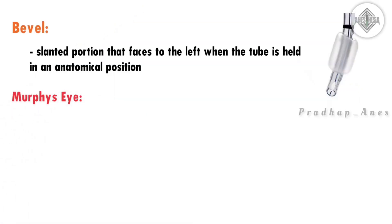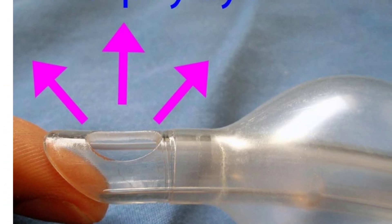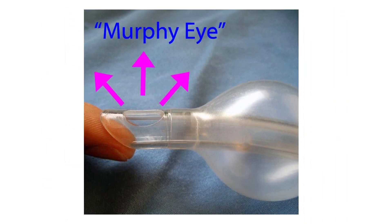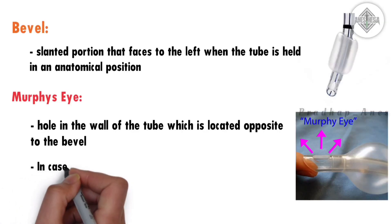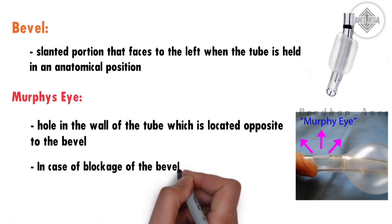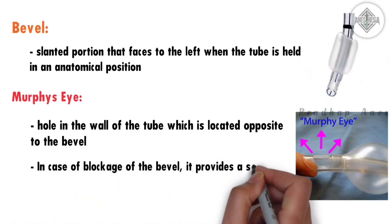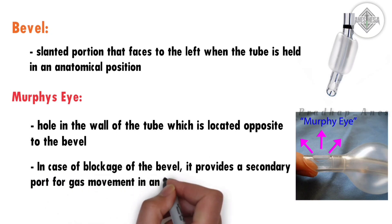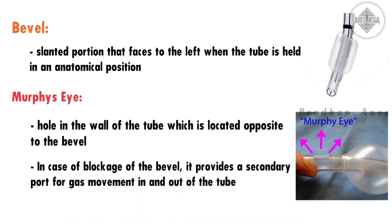Murphy's eye. Murphy's eye is a hole in the wall of the tube which is located opposite to the bevel. In case of blockage of the bevel, it provides a secondary port for gas movement in and out of the tube.